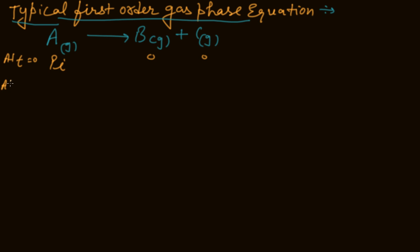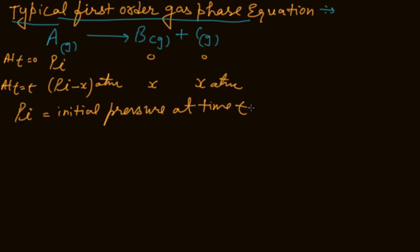At time T, Pi minus X is released or breaks down. Then it is coming X atm, again it is coming X atm concentration. And Pi is equal to initial pressure at time T equals zero.